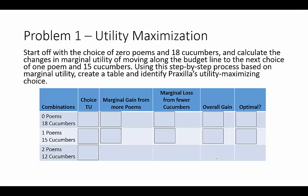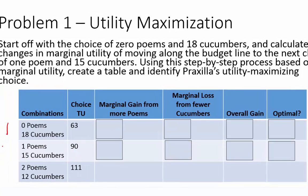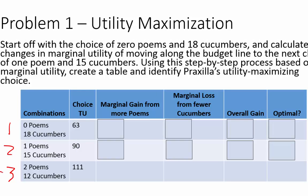One way to find the utility maximum is to build a table. We plug in the total utility for each budget combination. Starting with zero poems and 18 cucumbers, we have a total utility of 63. Moving to the next options we see 90 and 111. Then we calculate the gains from moving between options — what is the gain on the poem side as we move from option one to option two? The first poem consumed gives a marginal utility gain of 30.